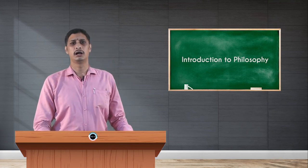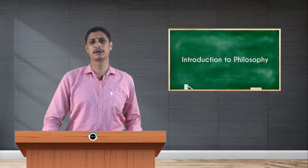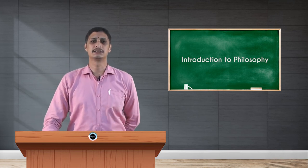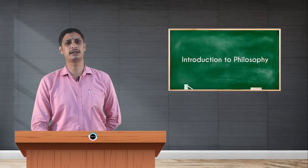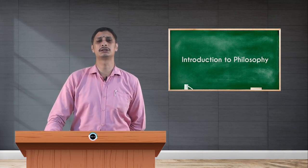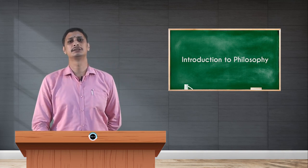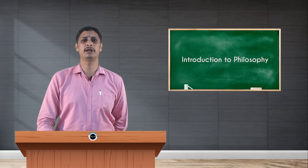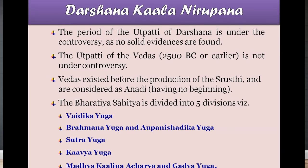Darshanas were authorized by great personalities called rishis. Rishis are scientists — all rishis are scientists, but not all scientists are rishis. They have atita jnana: knowledge of the past, present, and future. Such trikala jnanis are considered yogis or darshanikas.